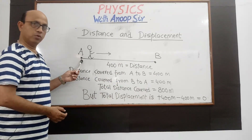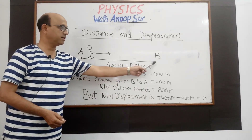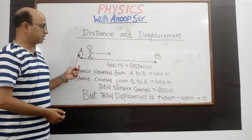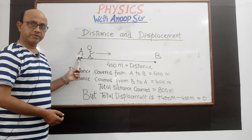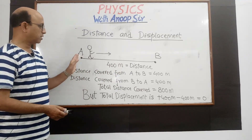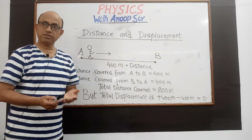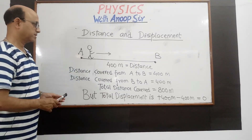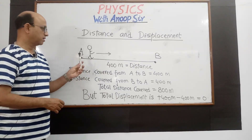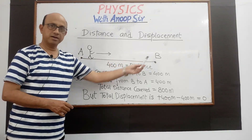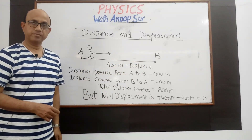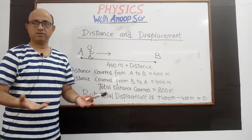This man has to move from A to B. The distance between these two points is 400 meters. He starts walking from A and reaches B, so the distance covered from A to B is 400 meters — very clear.